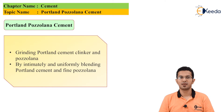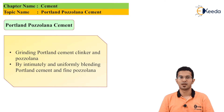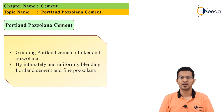It is very important because in the manufacturing of this cement, waste products like fly ash and volcanic ash can be used and the properties are also improved. In Portland Pozzolana cement we grind the Portland cement clinker and the pozzolana by intimately and uniformly blending the Portland cement and fine pozzolana.